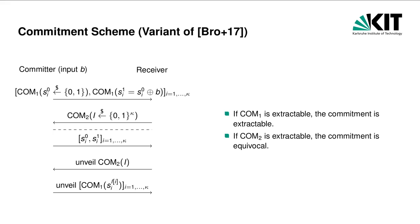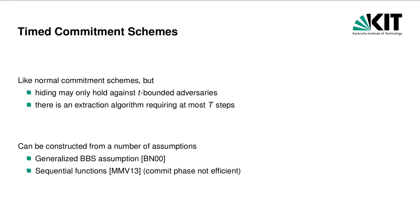First, the committer commits to an arbitrary value, say 0. When it learns the value it wants to unveil at the onset of the unveil phase, it sends shares in the first round of the unveil phase as follows: shares in commitments that will eventually be opened are sent unmodified. The other shares, whose commitments will never be opened, can be changed such that they reconstruct to the desired value. This is possible if the committer is able to extract the commitment to i, as i determines which commitments will be opened and which will not.